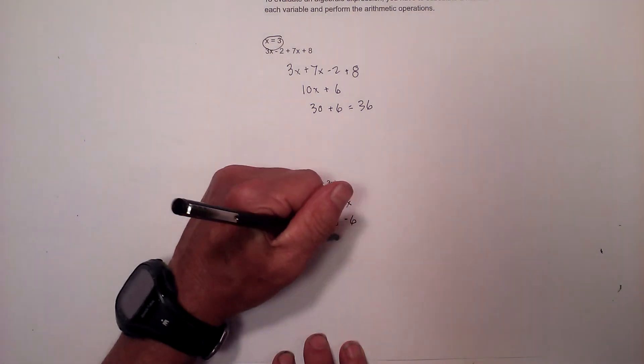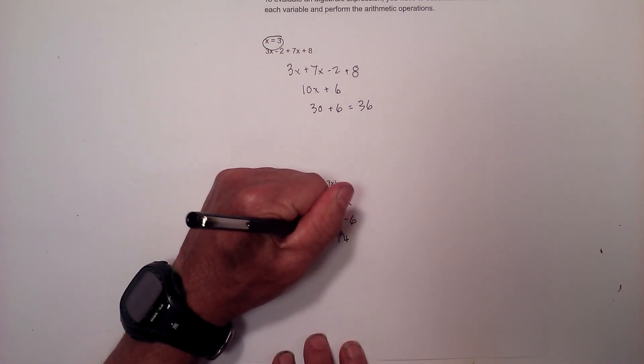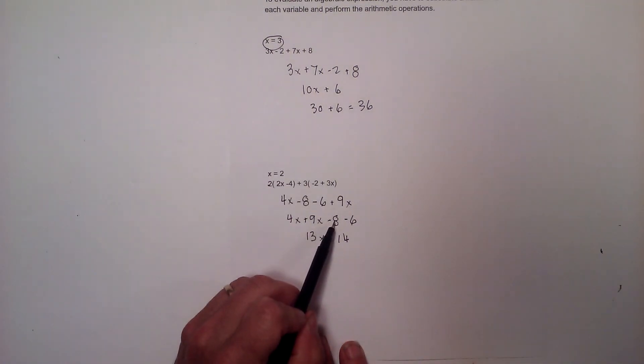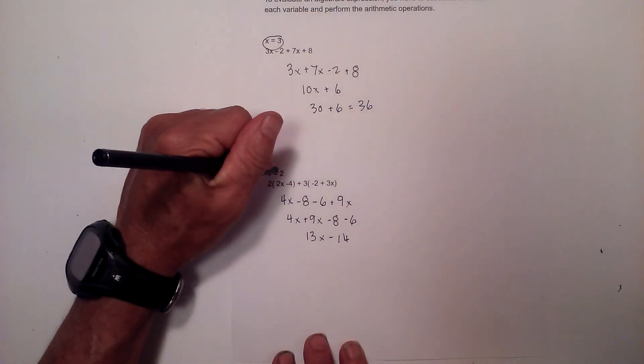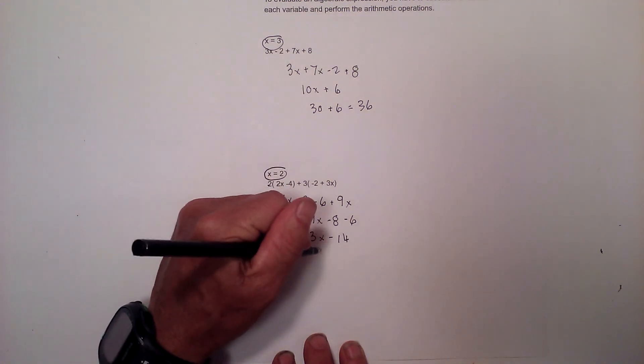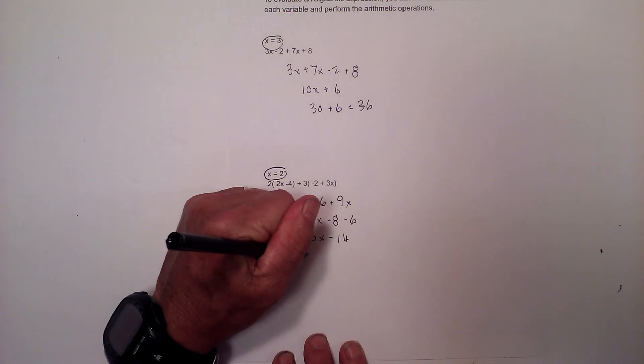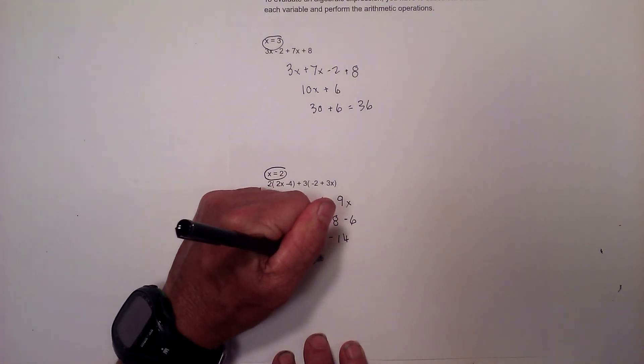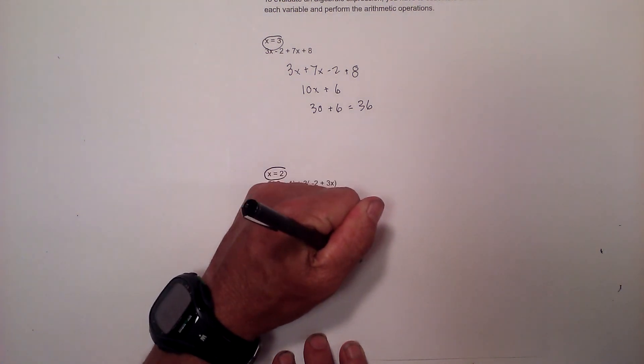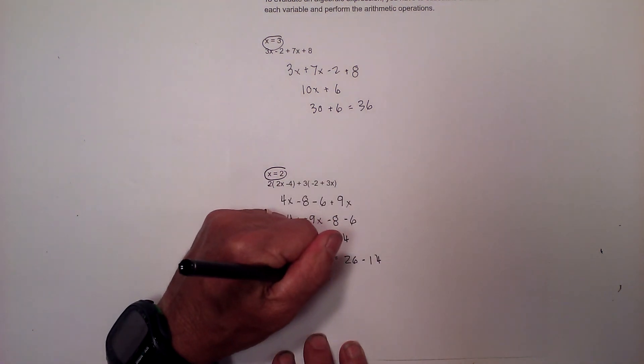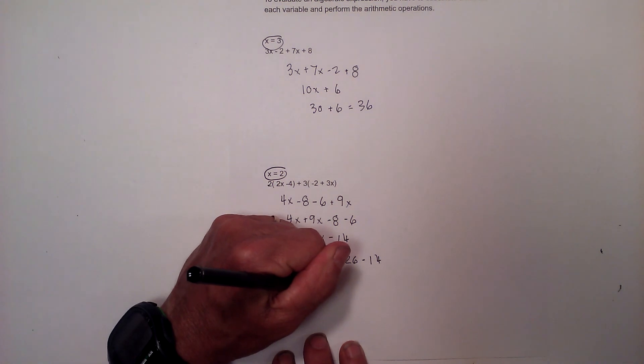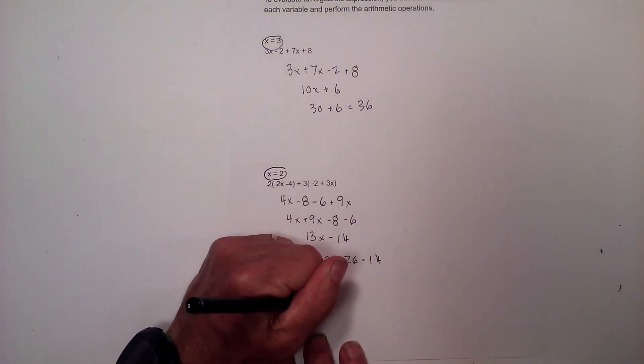When you're adding two negatives, you add and take the sign of the numbers. Now I plug 2 into the expression: 13 times 2 equals 26 minus 14. Let me work this out: 26 minus 14 is 6 minus 4...